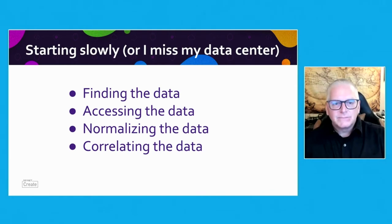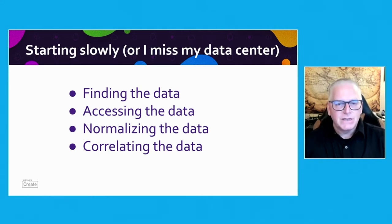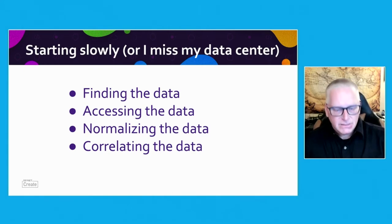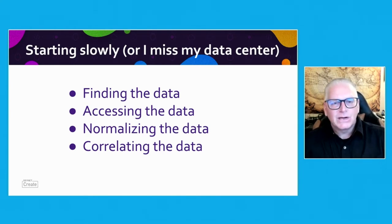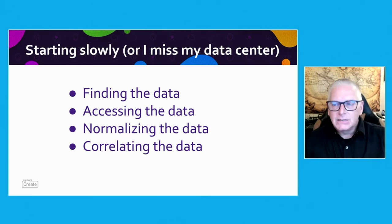Accessing this data — preferably through normal patterns, APIs, webhooks, et cetera — has been working well, but each provider has a different way of doing it, a different way of cataloging the information. A lot of the more mature companies and mature tools — GitHub's a great example — produce a lot of really good event information. Are we going to push this information, or are they going to push it to us, or are we going to pull it from them?